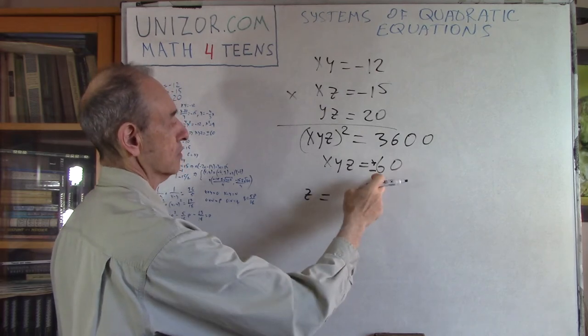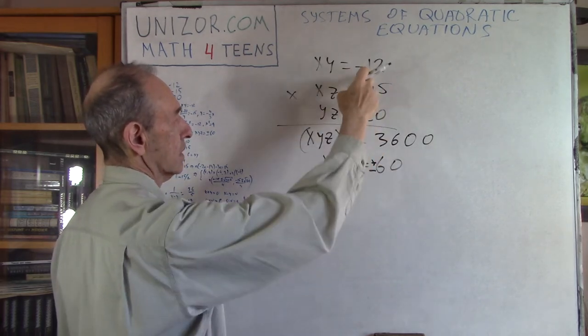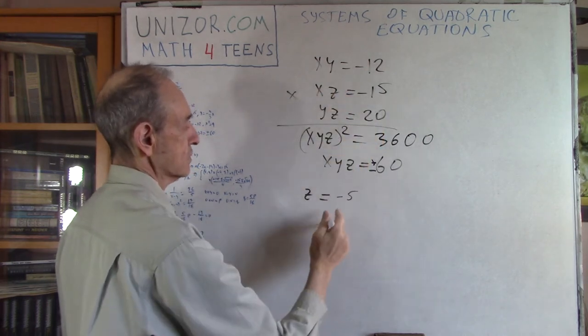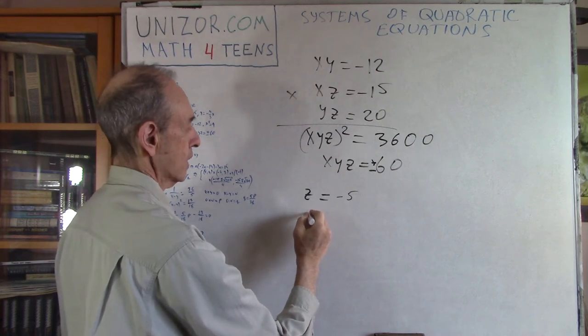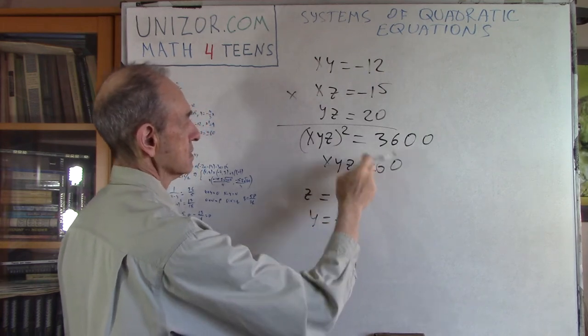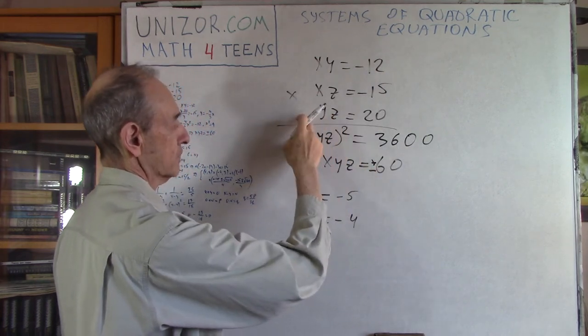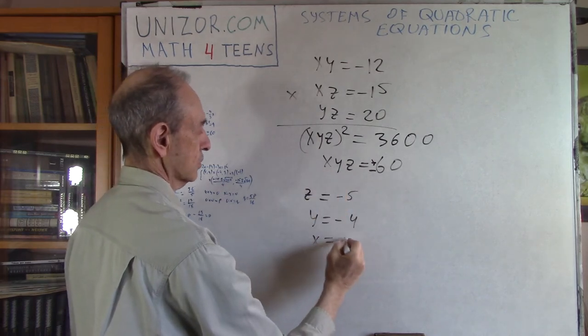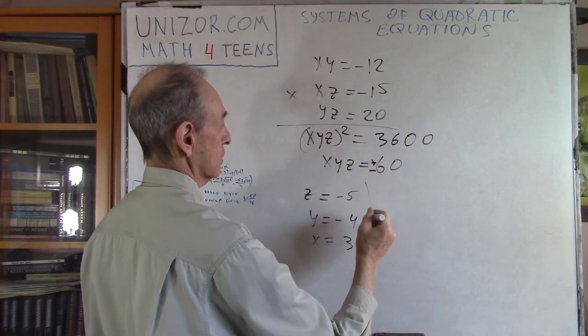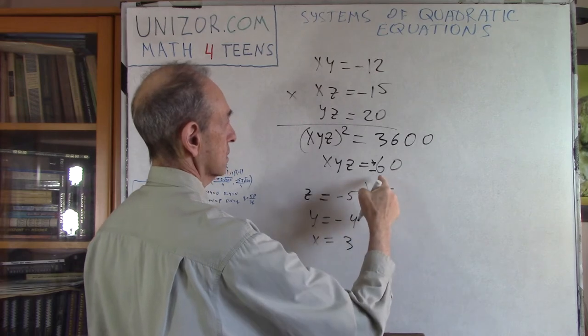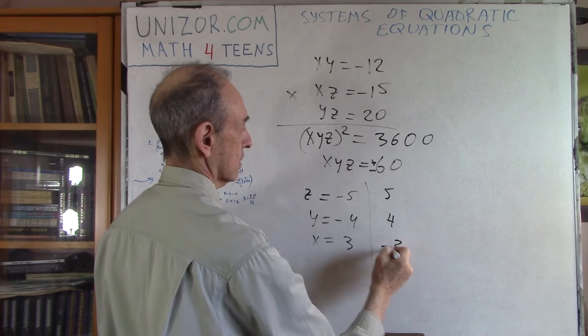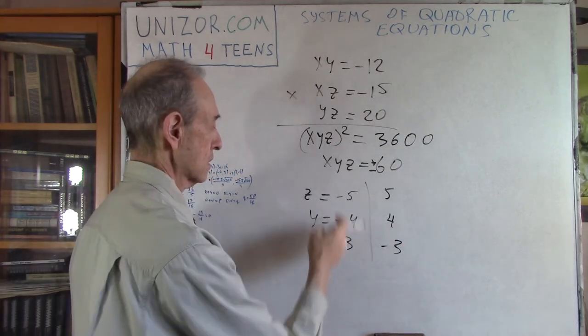So 60 divided by 12 would be minus 5, divided by minus 15 will be minus 4. So Y equals minus 4 and 60 divided by YZ will have X left. So X equals 3. And if I will use minus 60 divided by minus 20 would be 5, divided by minus 15 would be 4 and divided by 20 would be minus 3. The same two answers, two triplets.